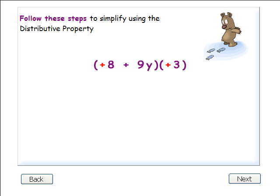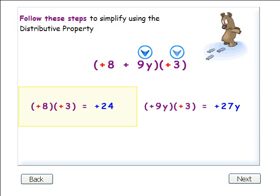Step 2: Multiply the plus 3 with the first term inside the parentheses, 8. Step 3: Multiply the plus 3 with the second term inside the parentheses, 9y. And step 4: Write down both answers in the order you got them.